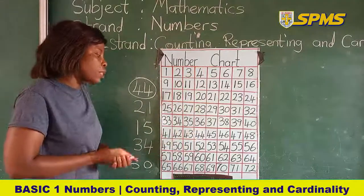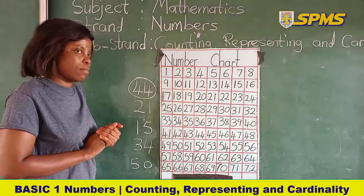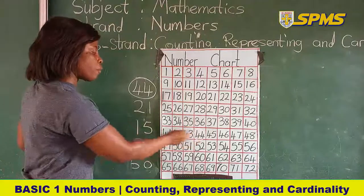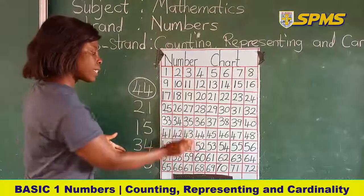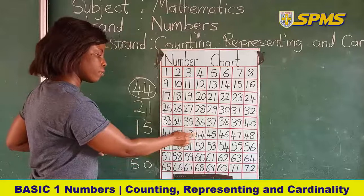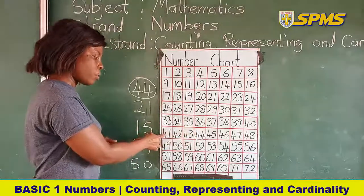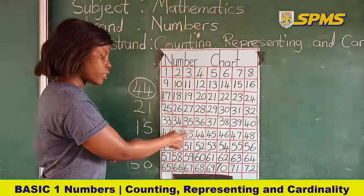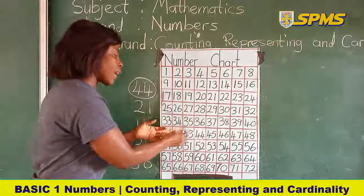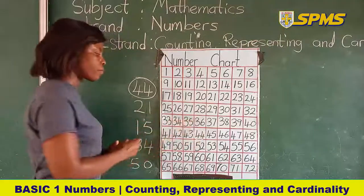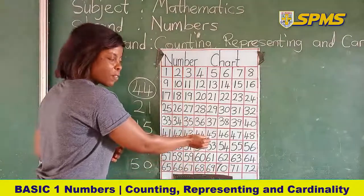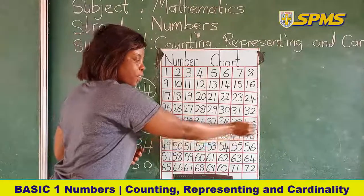What if I ask you to tell me the numbers on the left side of 44? When you are facing the board, your left is this side. So the numbers on the left of 44 are 41, 42, and 43. What about the right side of 44? You are going to tell me 45, 46, 47, and 48.